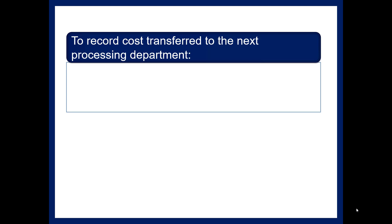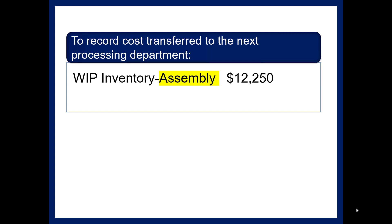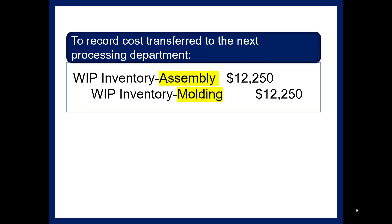To record the cost transferred to the next department: in job order costing, completed units go to Finished Goods Inventory, but in a process costing environment, costs move from one department to another. So as costs move to the assembly department, we'll debit Work in Process Inventory - Assembly for $12,250 and credit Work in Process Inventory - Molding.